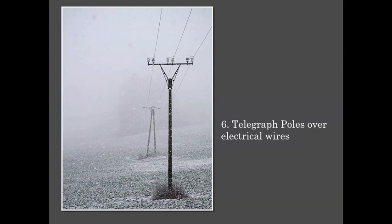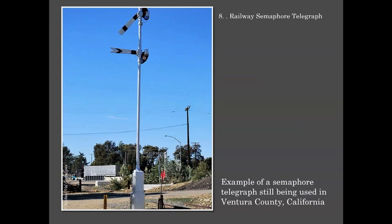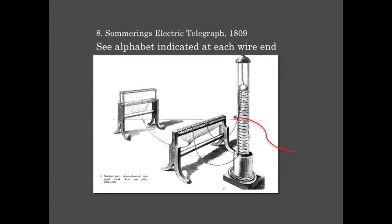Telegraph signals sent over electrical wires overcame these obstacles. An example of a semaphore telegraph still in use today is located on a railway line in Ventura, California. The electric telegraph was also met with resistance, criticized for being costly and not practical. In 1809, in Bavaria, Samuel Sömmering invented a crude electrochemical telegraph.